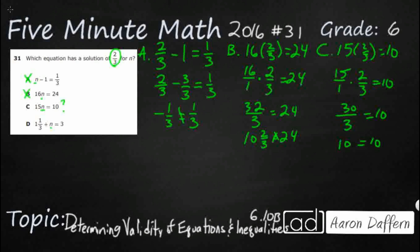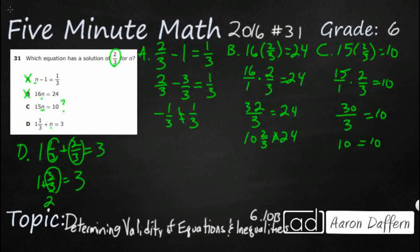Let's just double-check to make sure D is incorrect, in case we did something wrong. I've got 1 and 1 third plus 2 thirds equals 3. The 1 third and 2 thirds make a whole, so this becomes 1 and 3 thirds equals 3. Since 3 thirds equals 1, that's just 1 plus 1, which is 2. It does not equal 3, so that's not going to work.